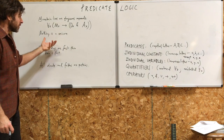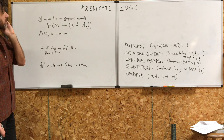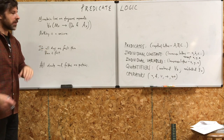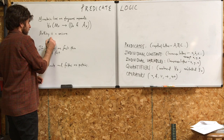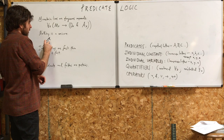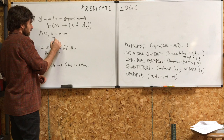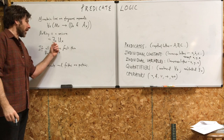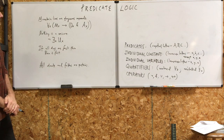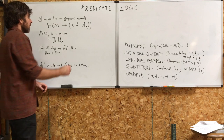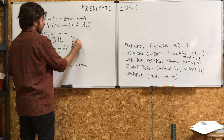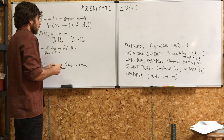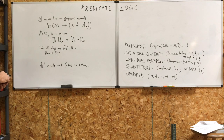'Nothing is a unicorn.' That doesn't fit a standard form categorical statement, so you've got to think about how to express this. Nothing is a unicorn — well, that's denying that something is a unicorn. So you'd say: it's not the case that for some X, X is a unicorn. It's false that there exists an X that is a unicorn. You might also think of it as: for all X, X has the property of not being a unicorn. It turns out these two are equivalent — we'll talk more about that later when we get into proofs.